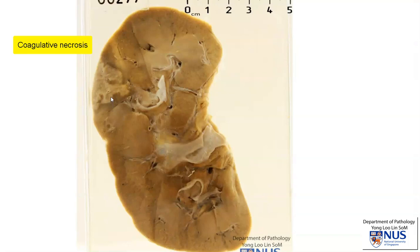Coagulative necrosis usually is reflected grossly as a paler appearance, and sometimes there is a rim of hyperemia due to reperfusion injury or due to rupture of the small delicate vessels.